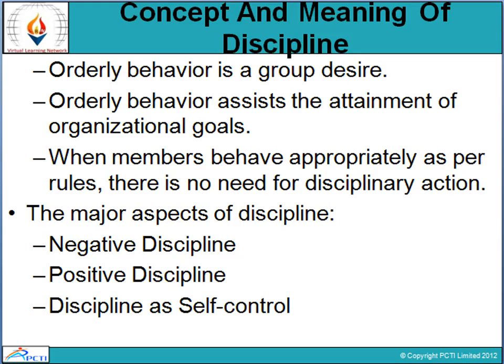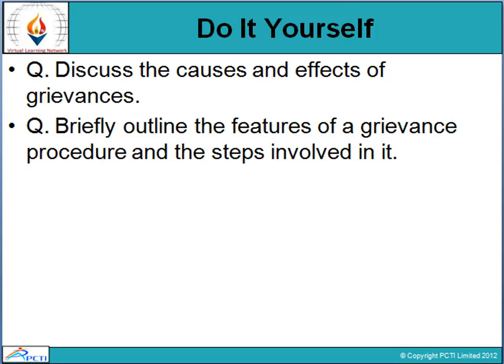Another type is self-control discipline, which is one of the most important disciplines. If employees are ready to control themselves and understand what kind of behavior is expected and what is not expected in the organization, they are automatically able to generate discipline on their own. In that case, there is no need for disciplinary rules, regulations, or disciplinary actions. These are the three aspects of discipline.